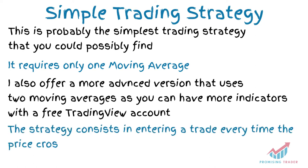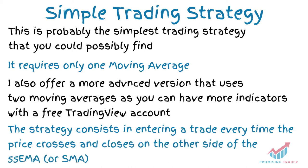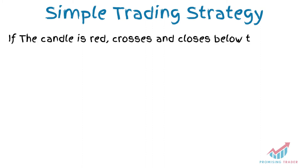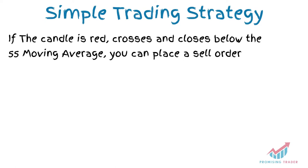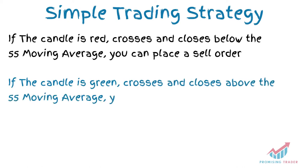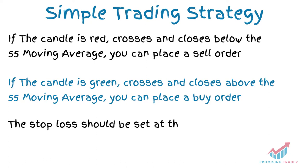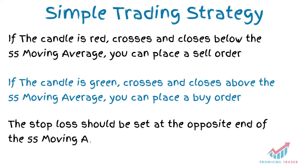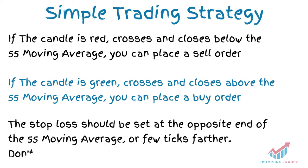The strategy consists in entering a trade whenever a candle closes crossing the 55 EMA — either buying or selling according to the direction of the candle. If the candle is red, crosses and closes below the 55 EMA, you would sell short the market. If it is green, crosses and closes above the 55 EMA, you would buy or go long. The next step before confirming the order is to set a stop loss, which needs to be at the opposite end of the candle that crossed the 55 EMA, or a few ticks farther.